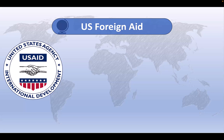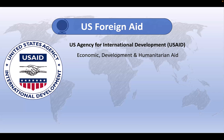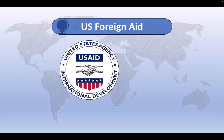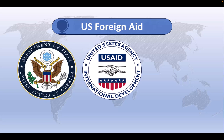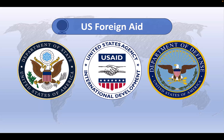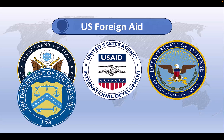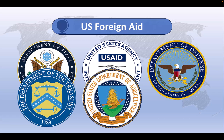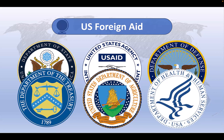The US foreign aid program spans a number of agencies and departments, the most important of which is the US Agency for International Development, or USAID. USAID is a federal agency that provides economic development and humanitarian assistance to countries around the world, and it's responsible for about 70 percent of the total US foreign aid budget. Other major agencies involved in US foreign aid include the US State Department, which is responsible for formulating and implementing US foreign policy and provides some foreign aid, primarily in the form of humanitarian assistance. The Department of Defense provides military assistance to a number of countries around the world. The Department of Treasury is responsible for managing US foreign exchange reserves and providing financial assistance to countries in need. The US Department of Agriculture oversees agricultural assistance to countries around the world, and the Department of Health and Human Services provides health assistance to developing countries.